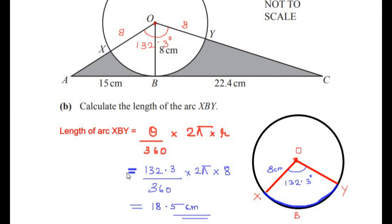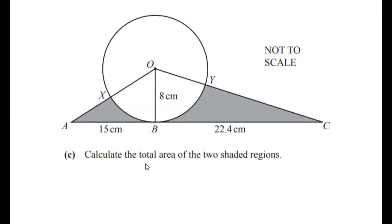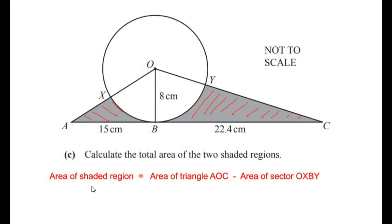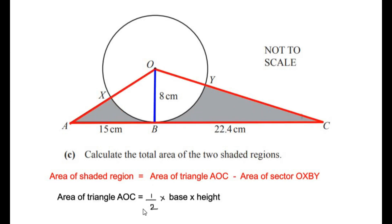Now let us move on to the last part: calculate the total area of the two shaded regions. To find this, we consider the total area of triangle AOC, and if we subtract the area of sector OXBY from it, we are left with the area of the shaded regions. So: area of shaded region = area of triangle AOC minus area of sector OXBY. The formula for the triangle is (1/2) × base × height.